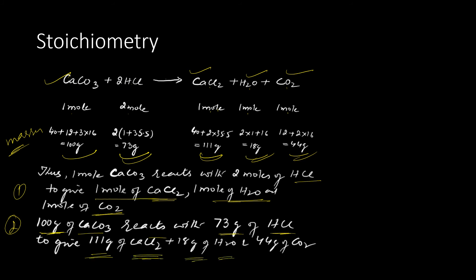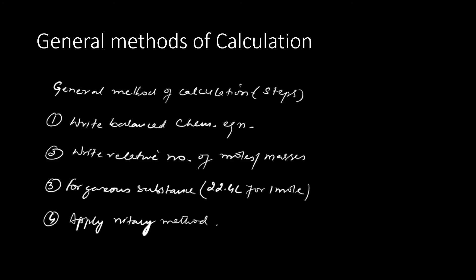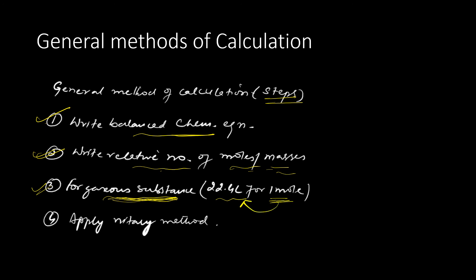Now, the general method for stoichiometry calculations involves the following steps. Step one: write the balanced chemical equation. Step two: write the relative number of moles and masses. Step three: for gaseous substances, use 22.4 liters instead of one mole. Step four: apply the unitary method.